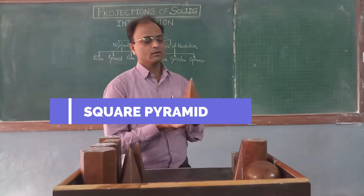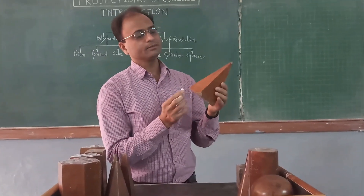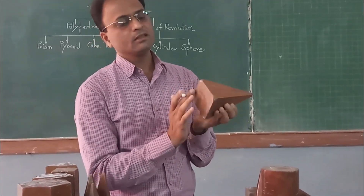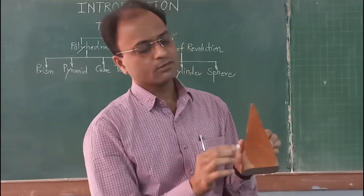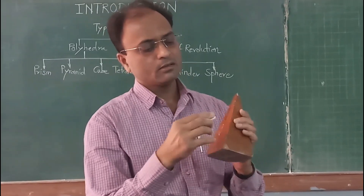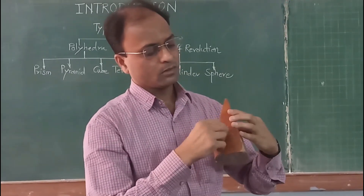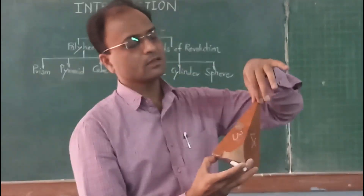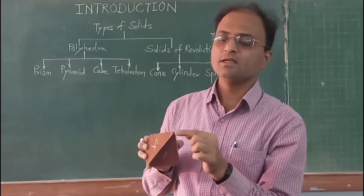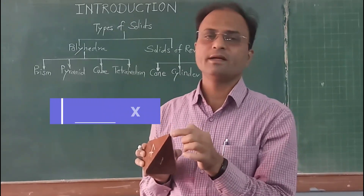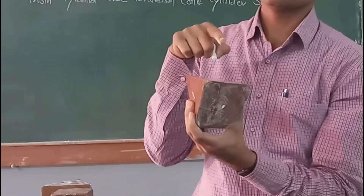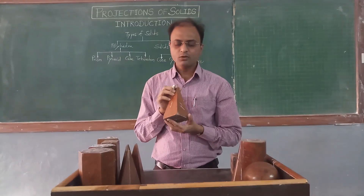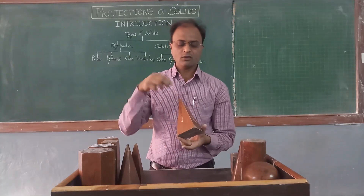The next solid under polyhedron is the pyramid. A pyramid is a solid which has a base in the shape of a regular polygon and bounding triangular surfaces. For a square pyramid, there are four bounding triangular surfaces, and they all merge at one point called the apex or vertex. An imaginary line joining the apex to the center of the base is called the axis. For drawing projections, we need the edge of base and height of axis.